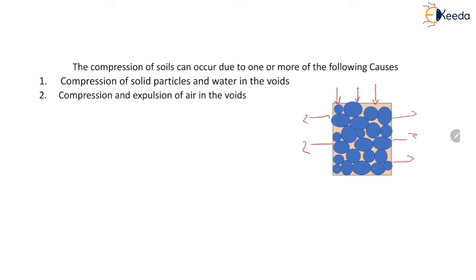The third cause for compression is expulsion of water in the voids. In the same way, the water which is present in the voids will move outward where pressure is low. This is also one of the main reasons for the compression of the soil mass.